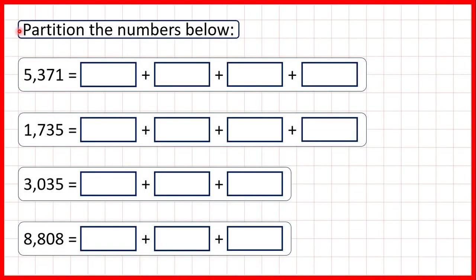We need to partition the numbers below. When we partition numbers, what we're doing is showing the value of each digit, and we usually represent a partitioned number as an addition.